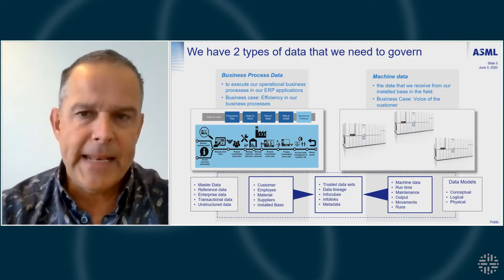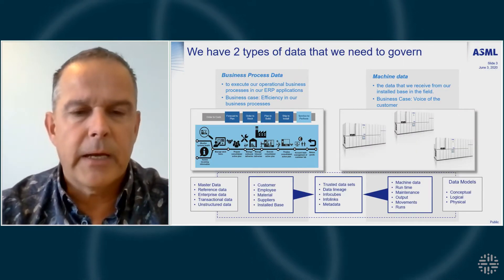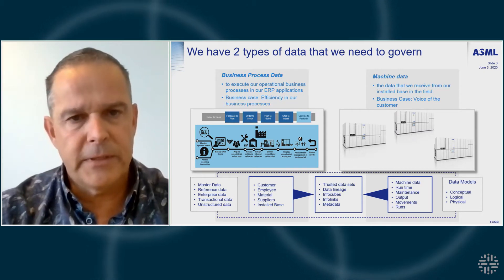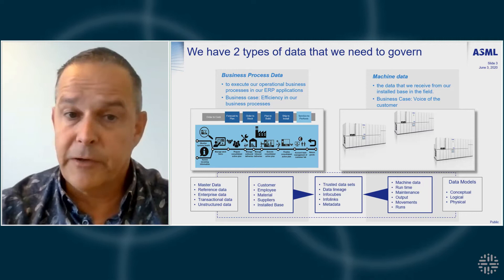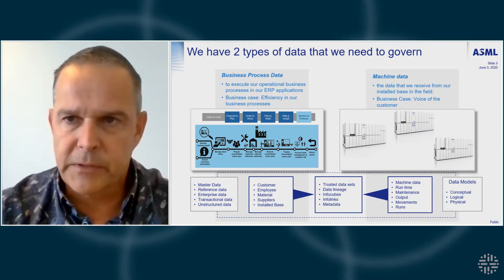If we look at the data that we use internally within ASML, we can really divide it into two major types. First of all, it's a lot of data that we use to support and run our business processes. We are using multiple applications within ASML to run our business, and those applications, of course, need data. You see some examples like customer, employee, vendor, and material information — all needed to run the business. And those applications also share the data, so it's very important for us to have clear definitions on what the data means, how it's used across several applications, and that it seamlessly flows through the business processes.